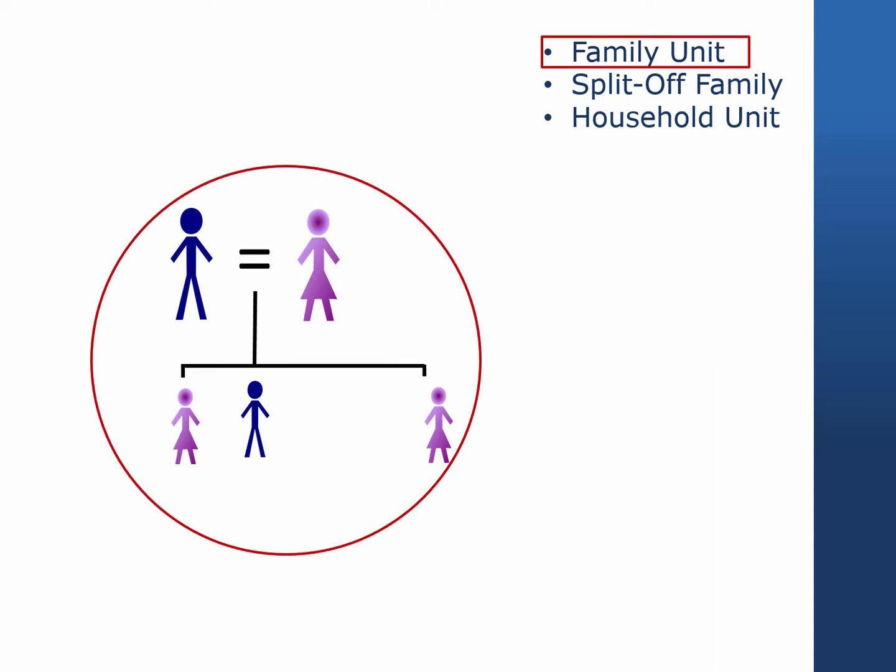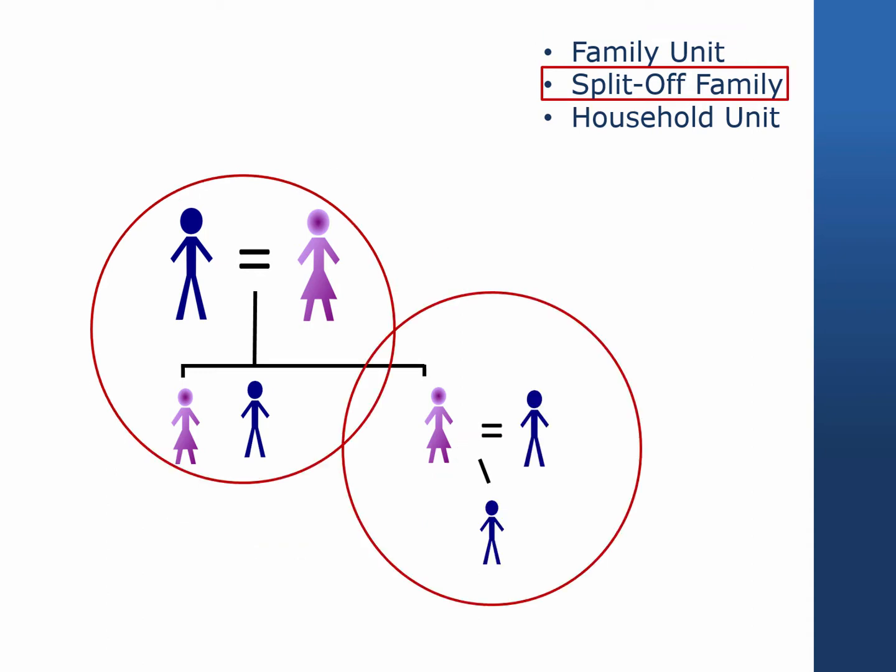Family unit members are almost always related by blood, marriage, or adoption, and they all live in the same household. Occasionally, an unrelated person who is permanently living in a household sharing both family income and expenses may be included in the family unit.